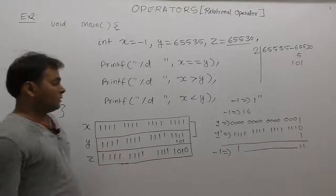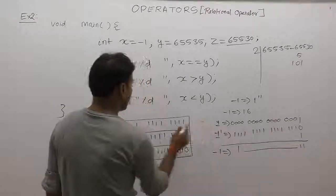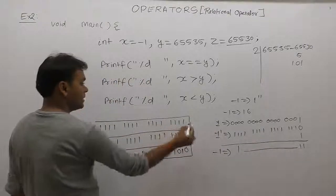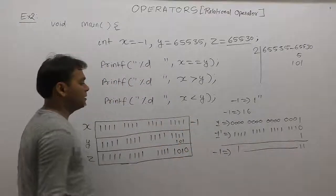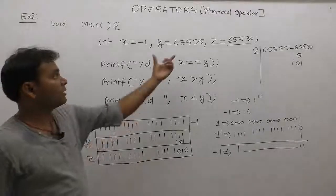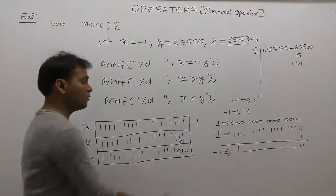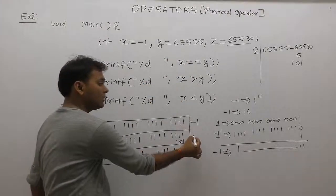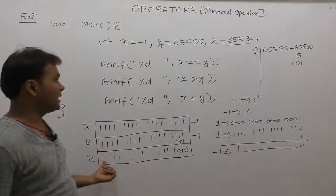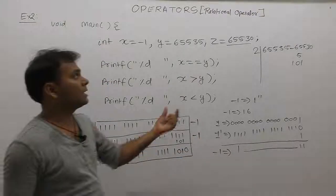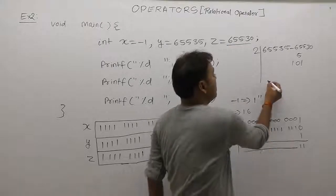After that, in the first case x was assigned minus one, and the binary of minus one was all ones. In the second case, y was assigned 65,535, but logically it is equivalent to minus one. Similarly, z was assigned 65,530. As we know, what is the maximum or minimum range of integer: the minimum range is -32,768 and the maximum range is 32,767.